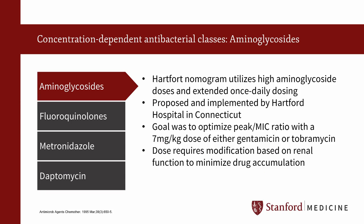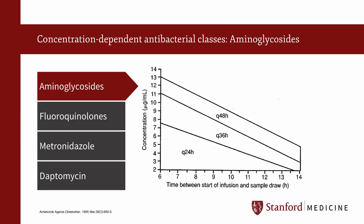The Hartford nomogram is a commonly used high-dose extended interval dosing method for aminoglycosides. This method aims at optimizing the peak to MIC ratio by administering a dose of 7 mg per kg of either gentamicin or tobramycin. Based on renal function, the dose requires modification in order to minimize drug accumulation. Due to the high peak concentrations obtained and the drug-free period at the end of each dosing interval, this nomogram eliminates the need to draw standard peaks and trough levels. Rather, a single random blood sample is obtained between 6 to 14 hours after administration of the aminoglycoside, and the serum concentration is then plotted on the nomogram to determine the appropriate dosing interval.